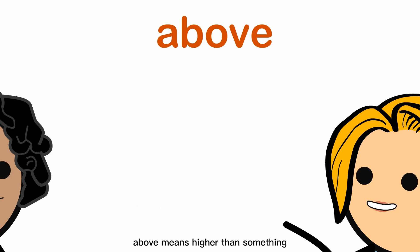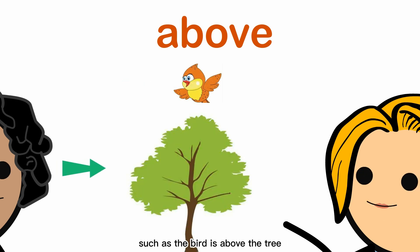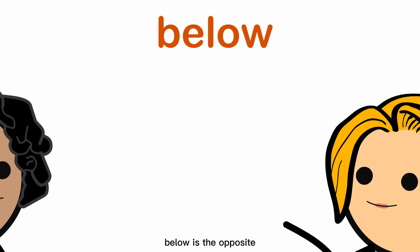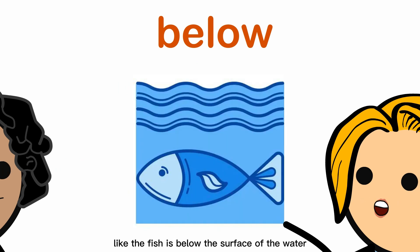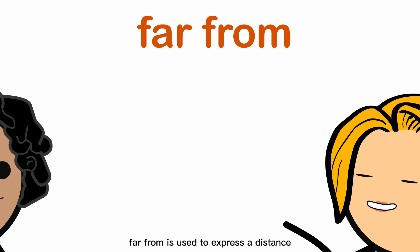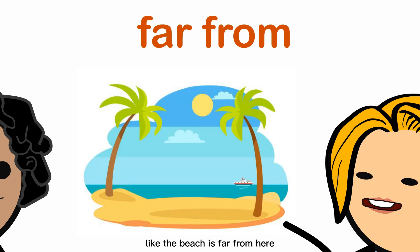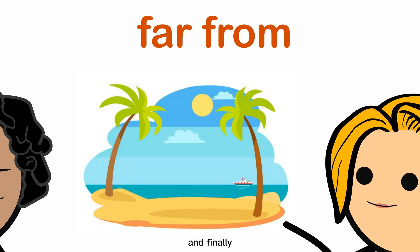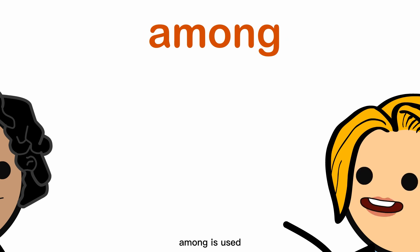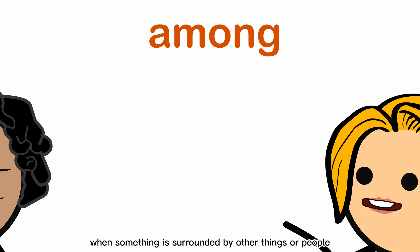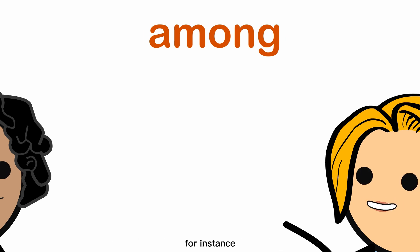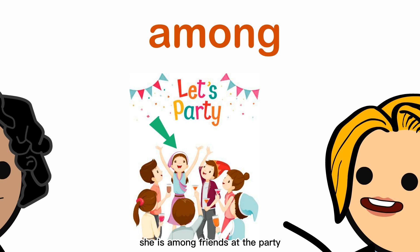'Above' means higher than something, such as the bird is above the tree. 'Below' is the opposite, indicating something is lower, like the fish is below the surface of the water. 'Far from' is used to express a distance, like the beach is far from here. And finally, 'among' is used when something is surrounded by other things or people — for instance, she is among friends at the party.